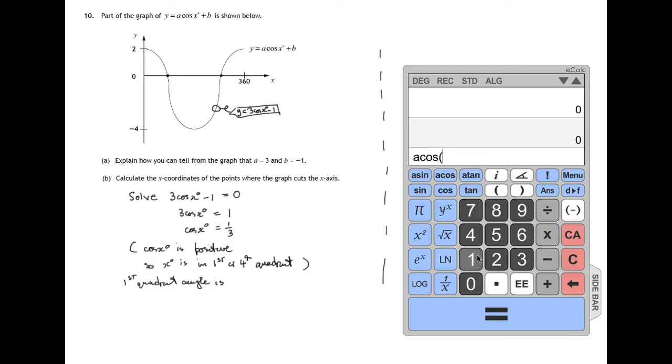1 third, 1 divided by 3. So the angle whose cosine is 1 third.